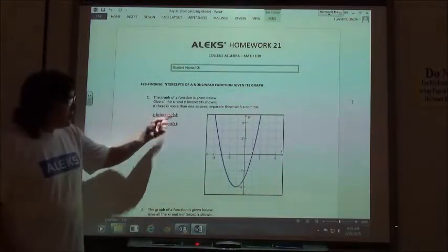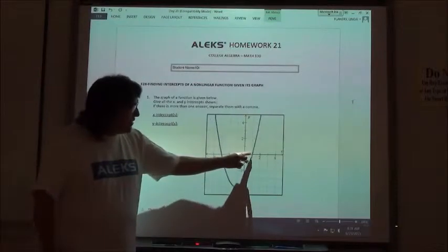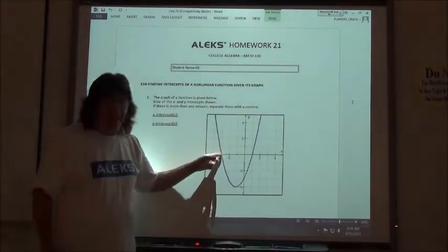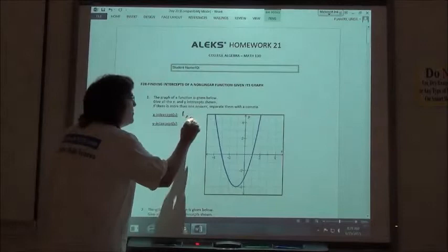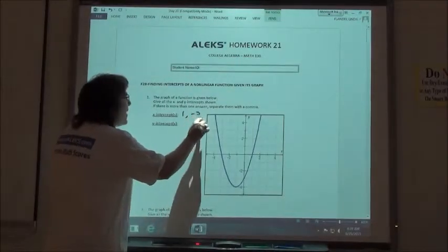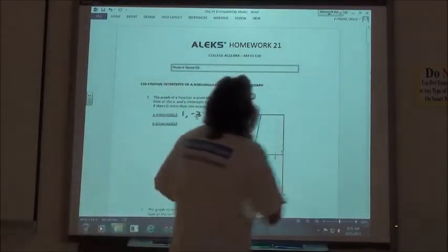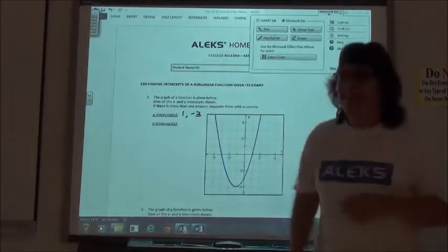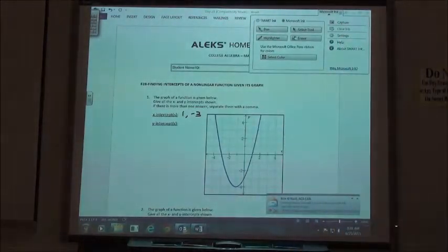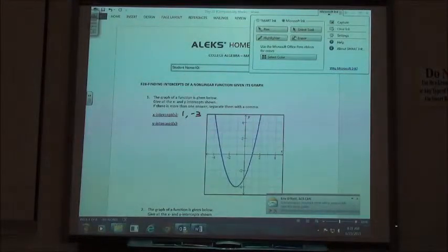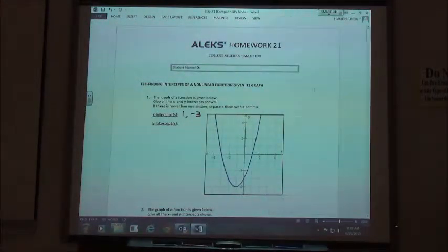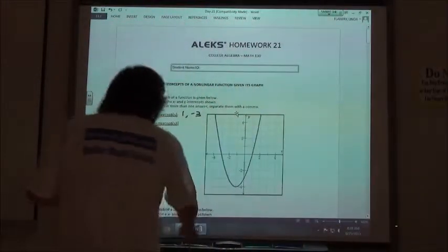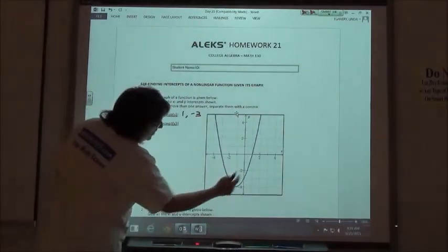So my x-intercepts in this case touch the x-axis at positive 1 and at negative 3. You are going to put both of them in there and separate them with a comma. My y-intercept is where it touches the y-axis down here at negative 3.